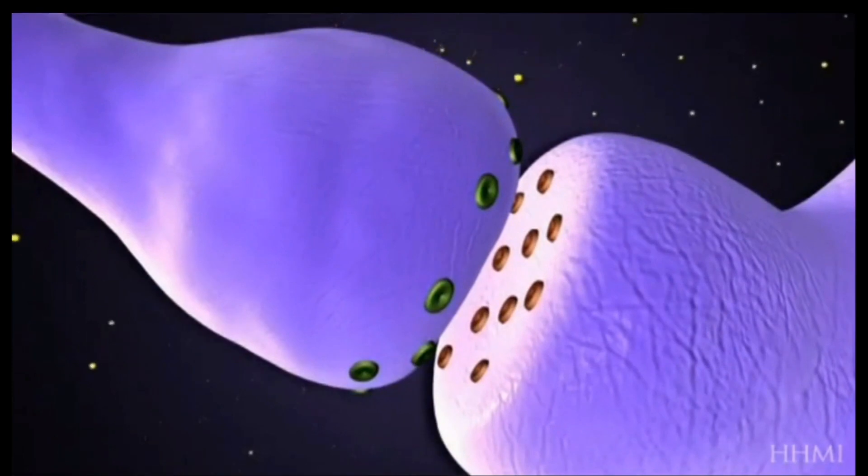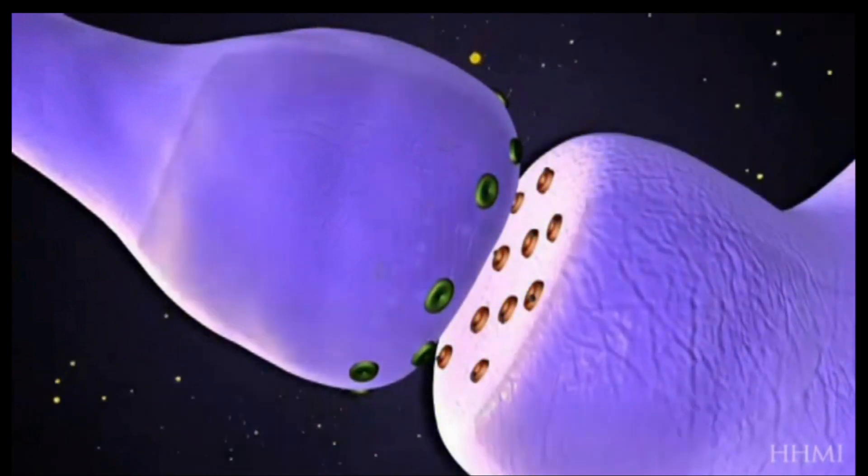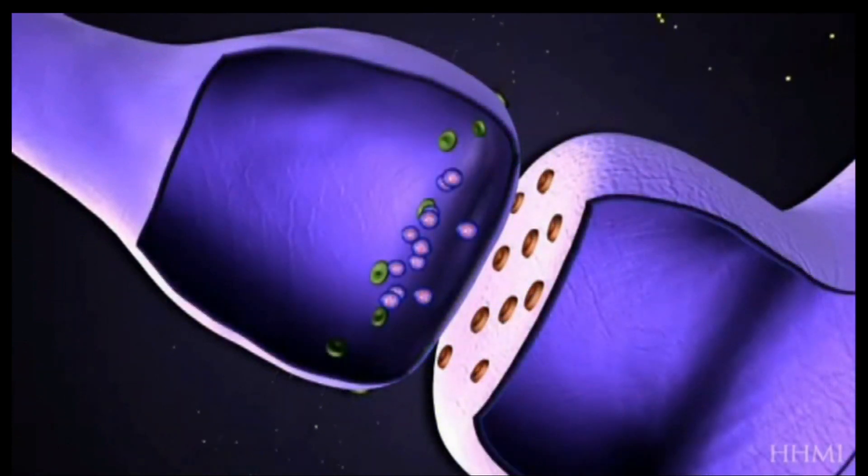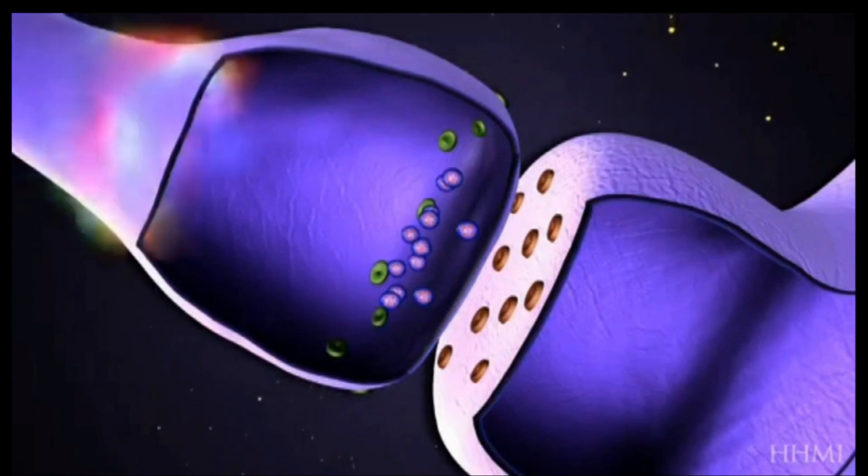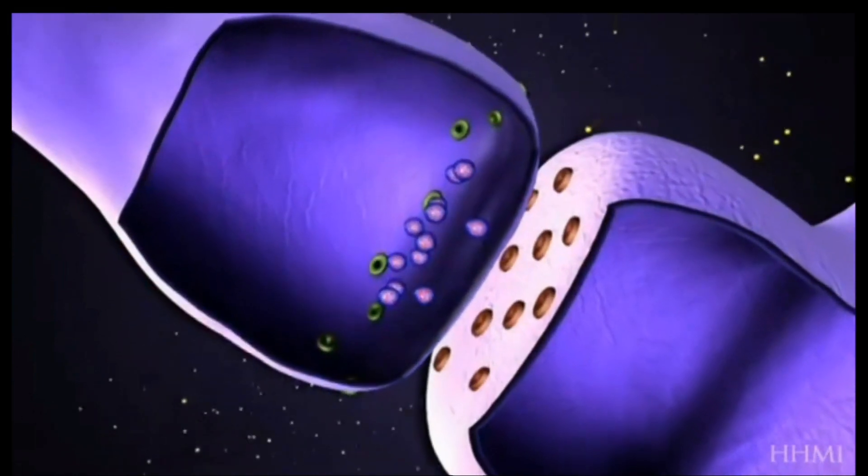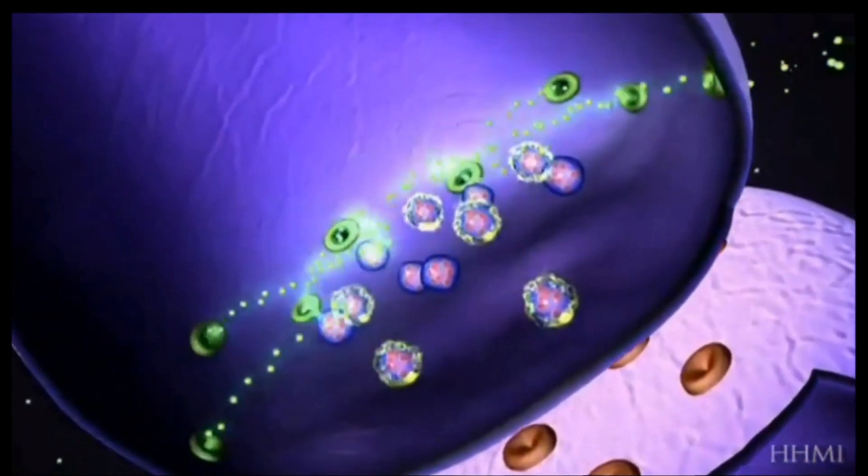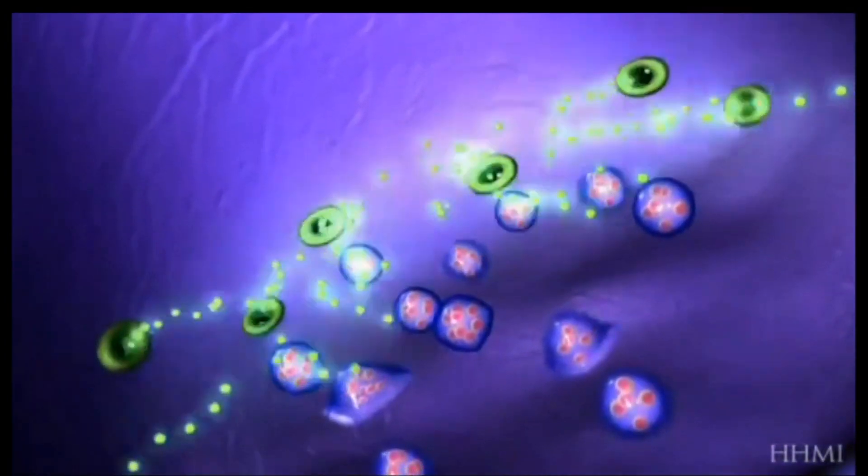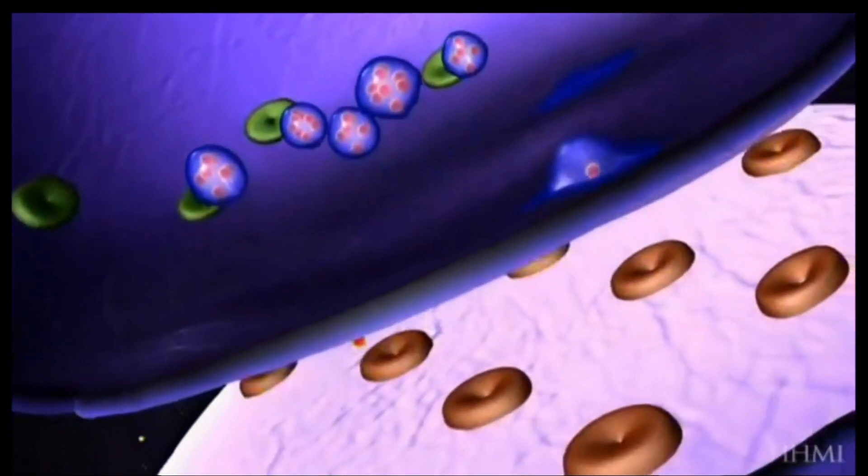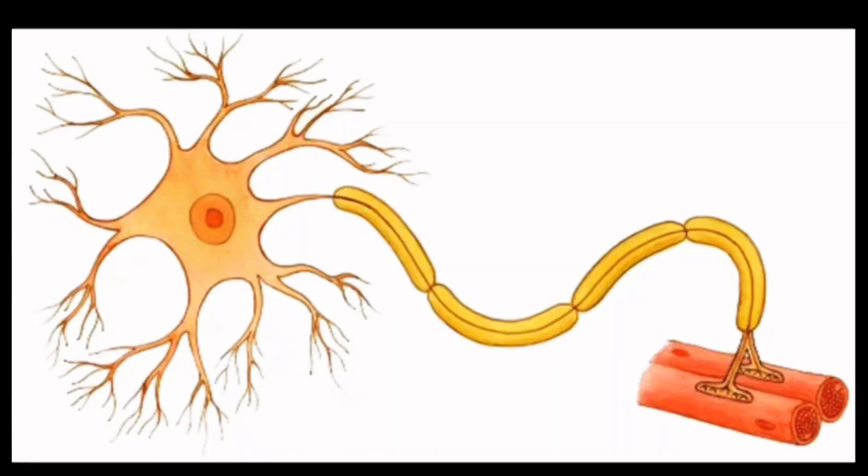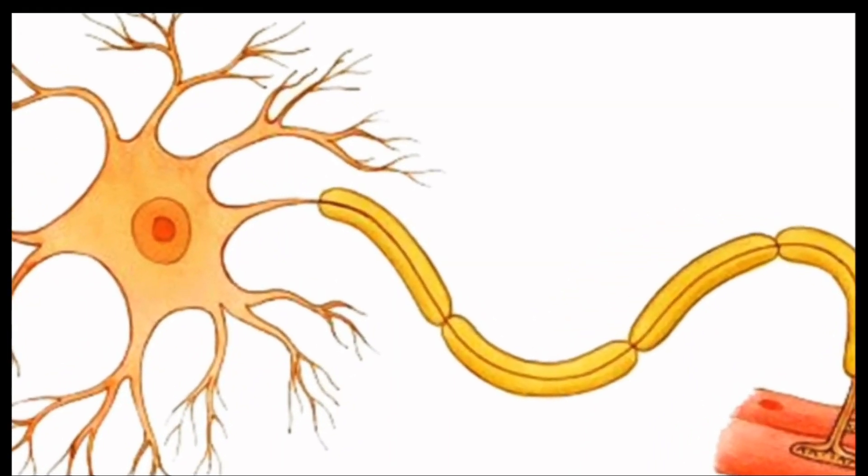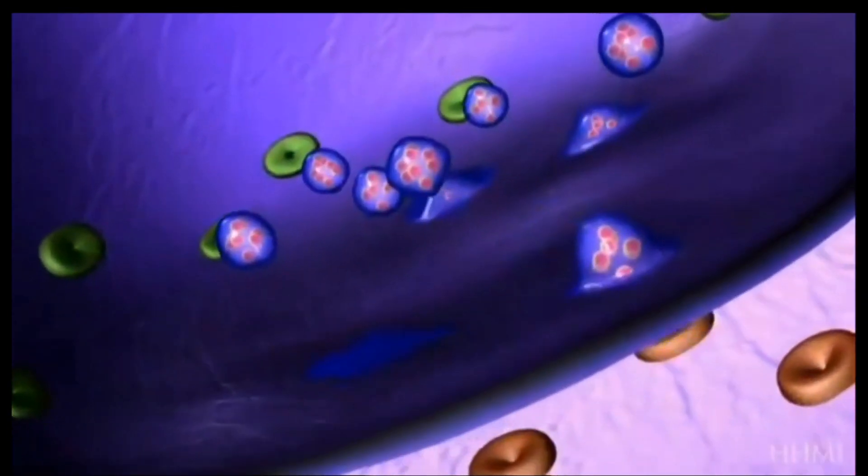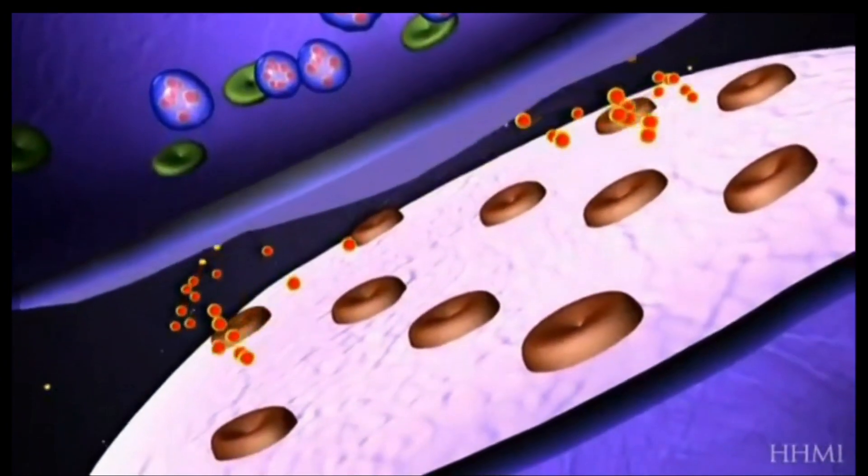See what happens to the synaptic knob when impulses are reached there. You can see from the synaptic knob some chemicals are secreted outside, and these chemicals are known as neurotransmitters. From the synaptic knob, some chemicals are produced and these are secreted outside the neuron. They are called neurotransmitters, the function of which will be explained later.